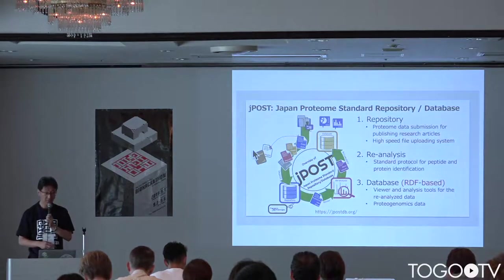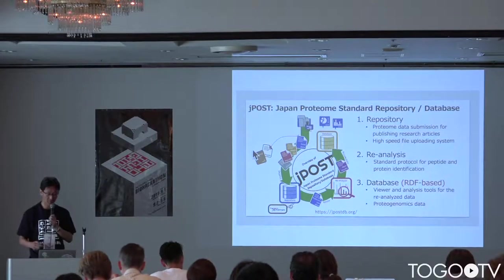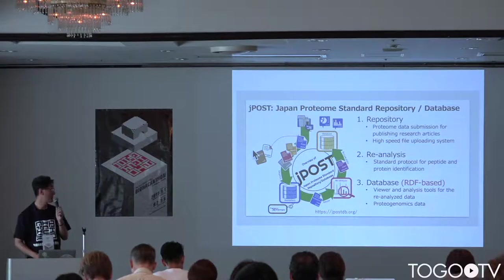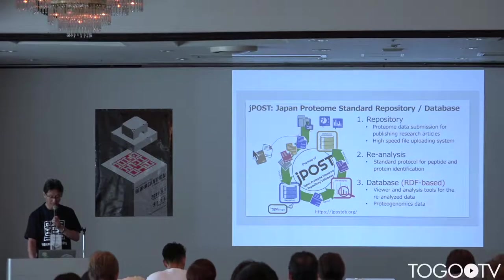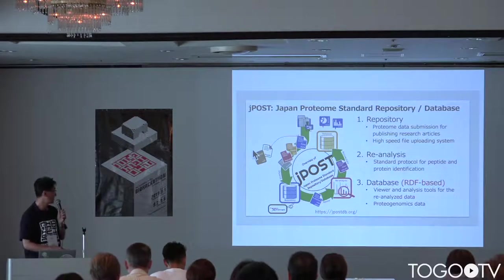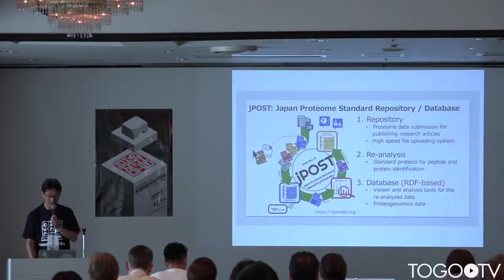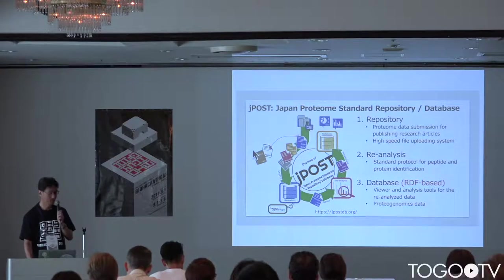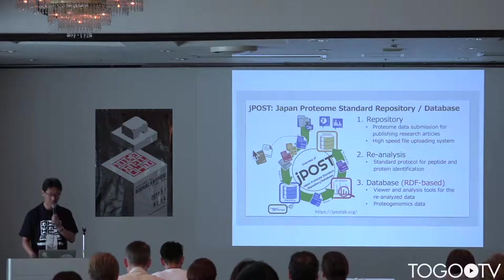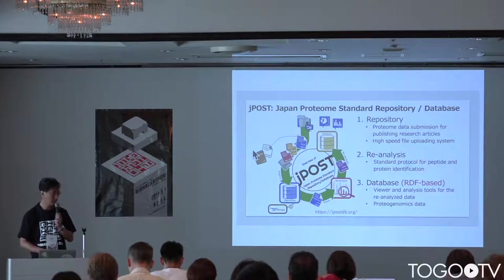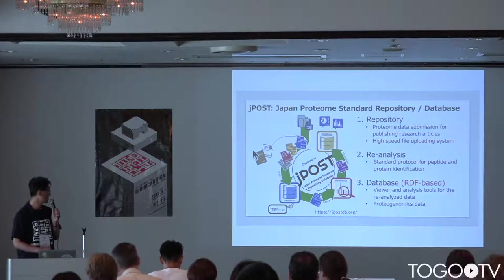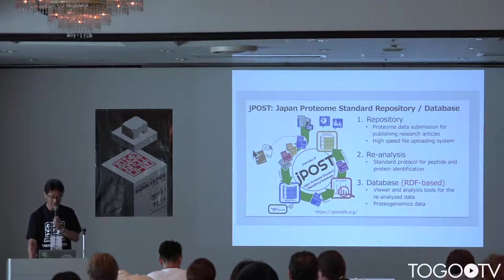J-POST consists of three parts. The first part is a repository, which is for submitting data for the publication of proteome data from lab experiments. The second one is a re-analysis tool, where we designed a standard protocol for peptide and protein annotation for submitted data. The third part is the database, where we convert all the data and create a database for re-analysis.